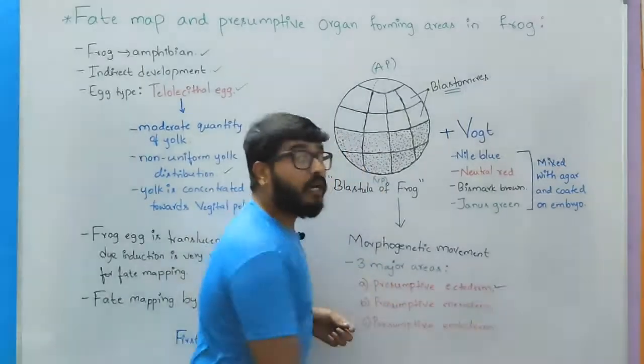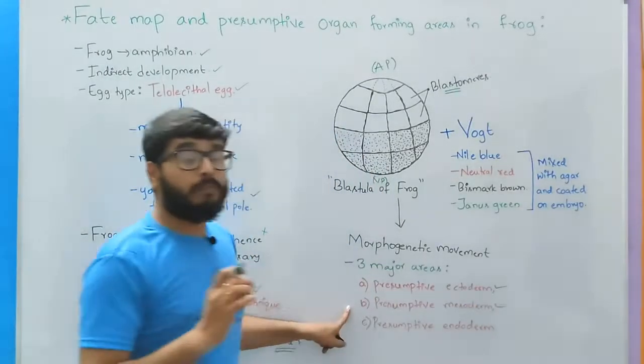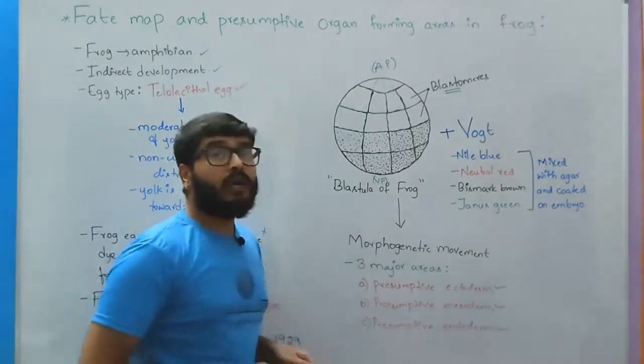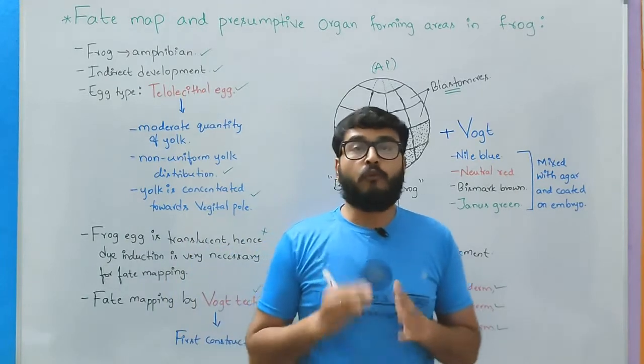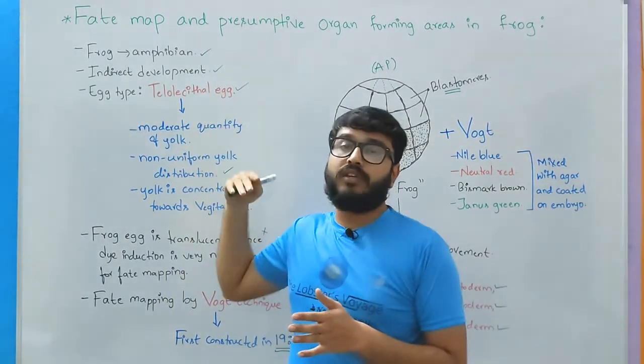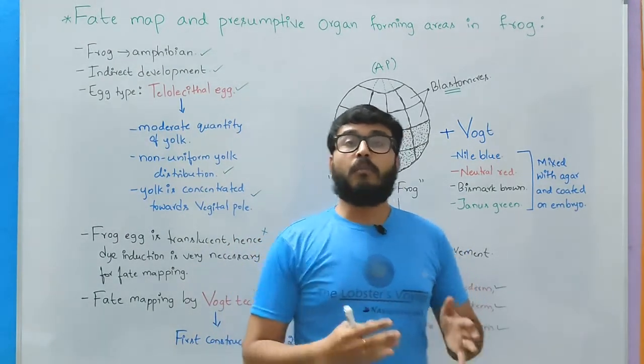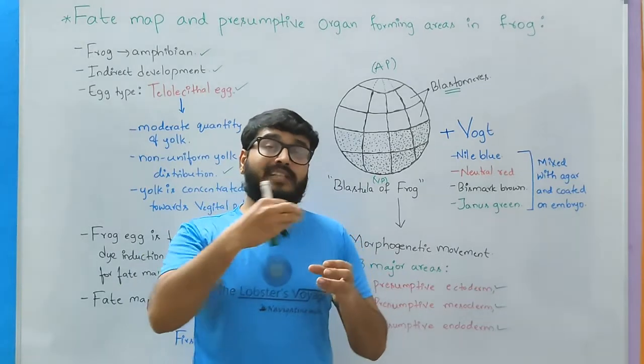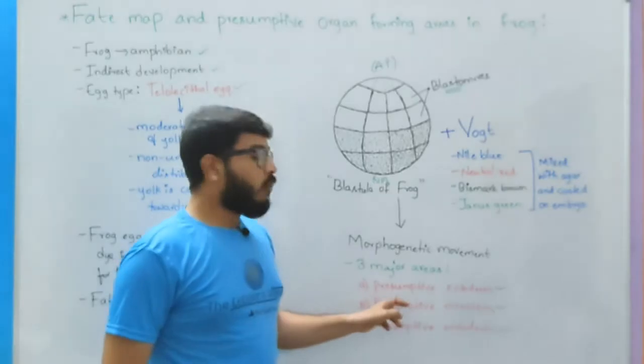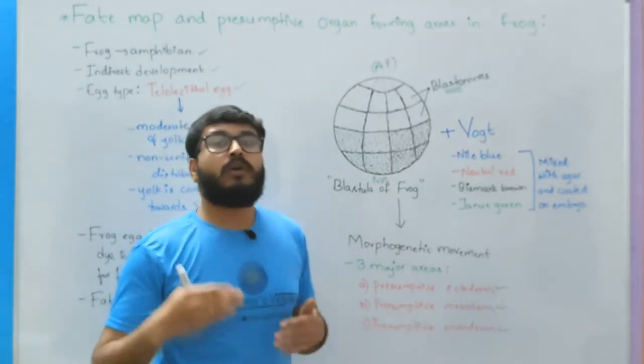One, the presumptive ectoderm forming area; second, presumptive mesoderm forming area; and third, presumptive endoderm forming area. So when you apply this artificial technique on the egg of the frog for fate map construction, after the morphogenetic movement or the internal cellular movement, we are able to distinguish three major regions: presumptive ectoderm, mesoderm, and endoderm.